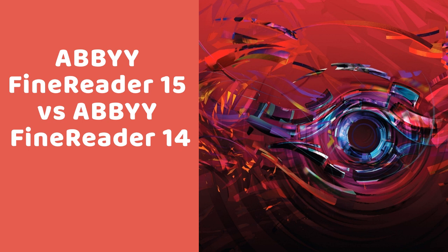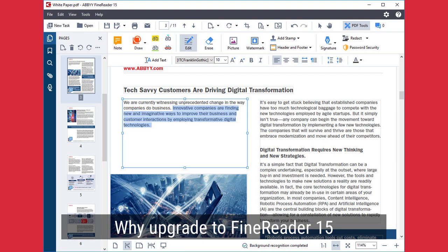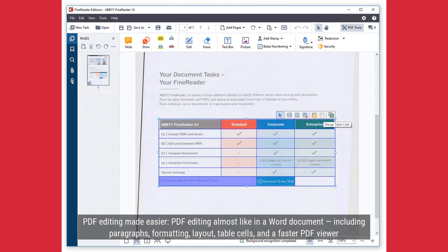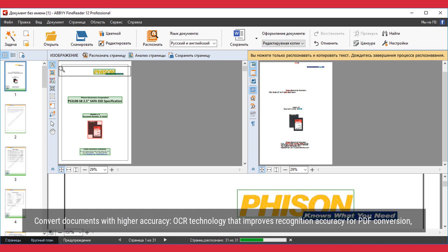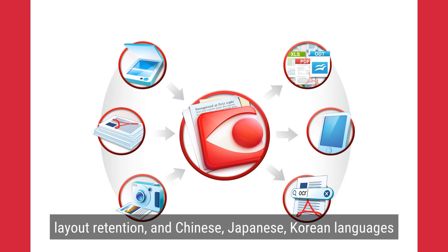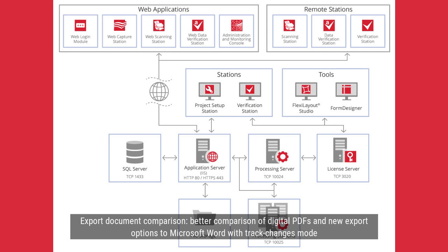ABBYY FineReader 15 vs FineReader 14 — why upgrade to FineReader 15? PDF editing is made easier, almost like in a Word document, including paragraphs, formatting, layout, and table cells, plus a faster PDF viewer. Convert documents with higher accuracy: OCR technology that improves recognition accuracy for PDF conversion, layout retention, and Chinese, Japanese, and Korean languages. Better document comparison of digital PDFs and new export options to Microsoft Word with Track Changes mode.